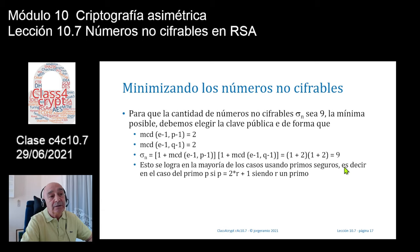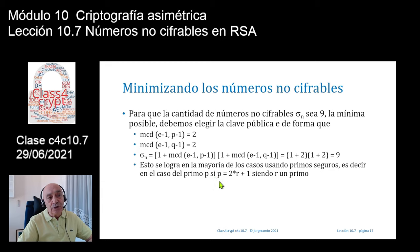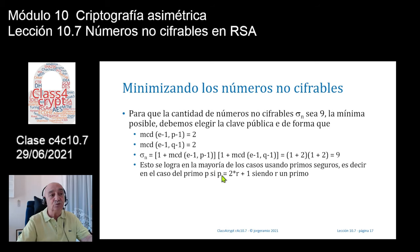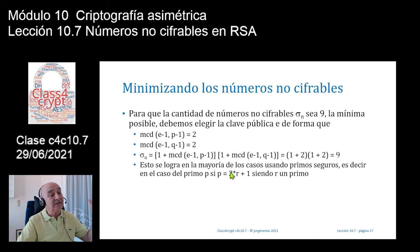¿Cómo se logra esto? En la mayoría de los casos usando primos seguros. Un primo seguro P cumple la condición de ser igual al producto de otro primo más pequeño R multiplicado por 2 más 1. Por ejemplo, el 23 es un primo seguro porque es el resultado de multiplicar 11 por 2, que da 22, más 1 = 23.